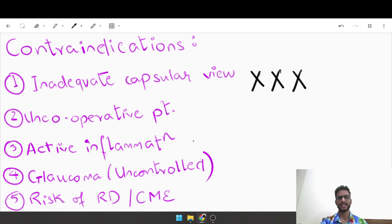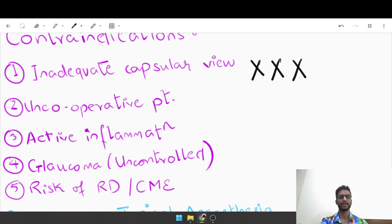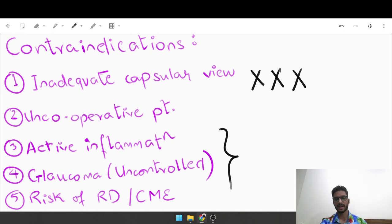In an uncooperative patient, do not do a capsulotomy. If there is any active inflammation, you do not do a capsulotomy for the simple reason that after capsulotomy you are actually going to add to the inflammation of the eye. Any active inflammation such as uveitis, or if the patient has recovered from any condition in which the eye is going to show inflammation, you have to wait for a certain period of time before performing capsulotomy. Uncontrolled glaucoma - these particles are going to block the trabecular meshwork and raise the IOP. Finally, if there is any risk of retinal detachment or cystoid macular edema. The first two are absolute contraindications, the next three are relative contraindications.